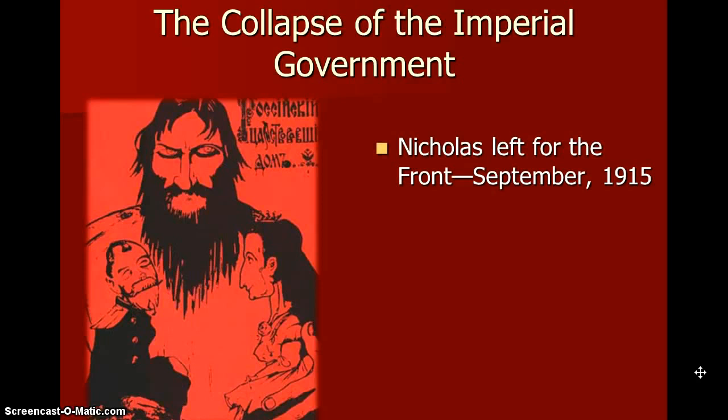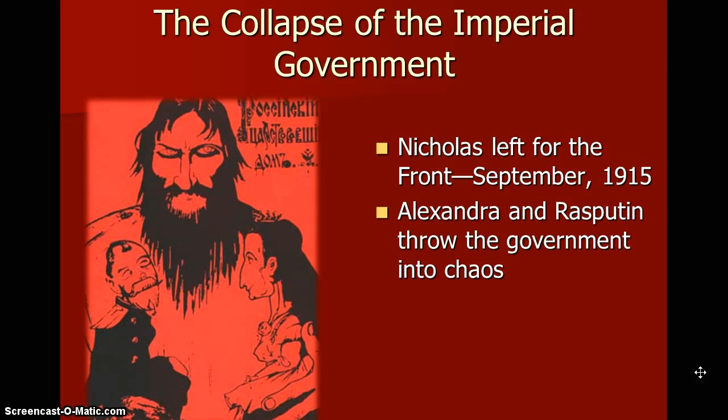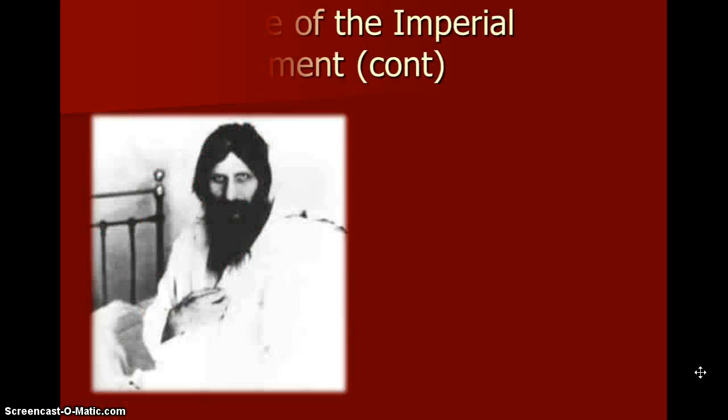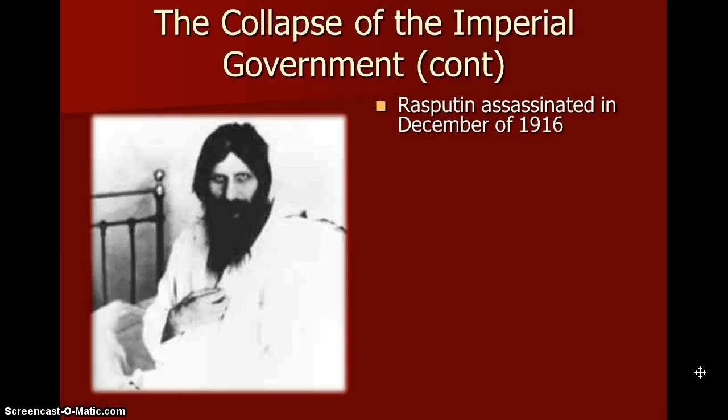The collapse of the imperial government. Nicholas left for the front in 1915. Nicholas the second, king of Russia, said 'I'm going to fight the war, I'm going to lead the war.' So he left the palace and left for the front, and it left Alexandra and Rasputin to throw the government into chaos. Alexandra and other high government officials were accused of treason, but nothing happened of course. Here's another scary picture of Rasputin. Rasputin was assassinated in December of 1916.